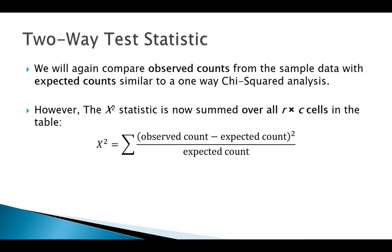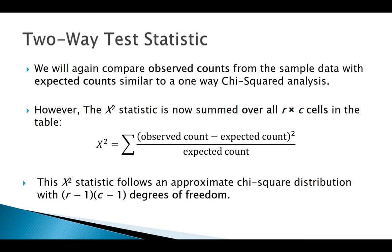Another difference from a goodness of fit test is that we find our degrees of freedom a little bit differently. We take our number of rows minus one, multiply by our number of columns minus one.